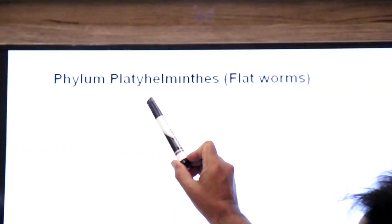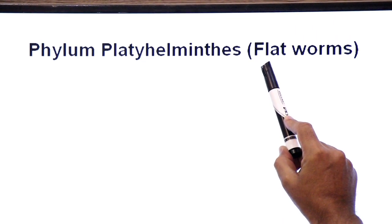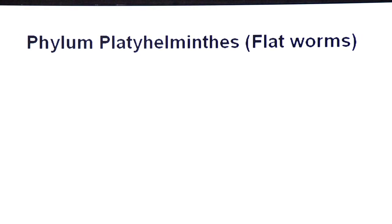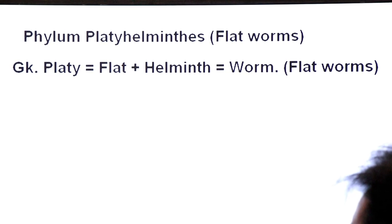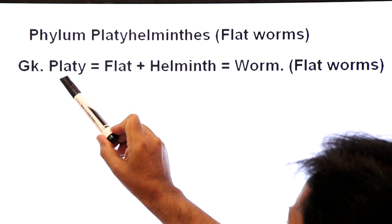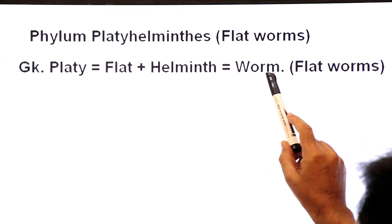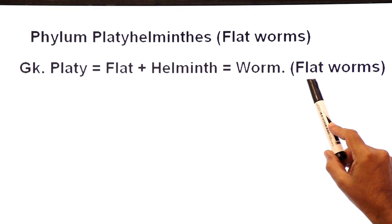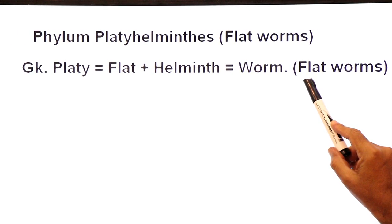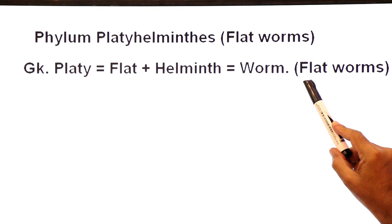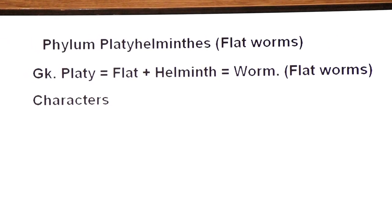Today we will discuss phylum Platyhelminthes, whose members are commonly known as flatworms. The word Platyhelminthes has Greek origin — 'platy' means flat, plus 'helminthes' means worm. They are called flatworms because their body is flat from both the dorsal side and the ventral side; they are dorso-ventrally flat.